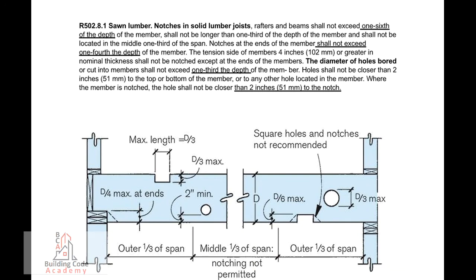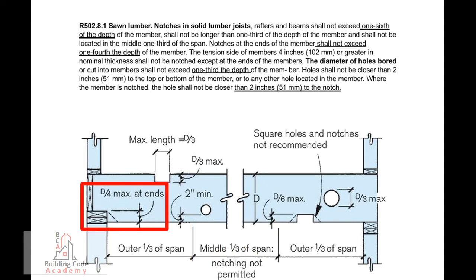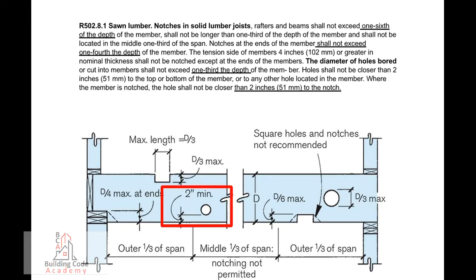Underfloor Space. R-502.8.1, Sawn Lumber. Notches in solid lumber joists, rafters, and beams shall not exceed 1/6 of the depth of the member, shall not be longer than 1/3 of the depth of the member, and shall not be located in the middle 1/3 of the span. Notches at the ends of the member shall not exceed 1/4 the depth of the member. The tension side of members 4 inches (102mm) or greater in nominal thickness shall not be notched, except at the ends of the members. The diameter of holes bored or cut into members shall not exceed 1/3 the depth of the member. Holes shall not be closer than 2 inches (51mm) to the top or bottom, or to any other hole located in the member. Where the member is notched, the hole shall not be closer than 2 inches (51mm) to the notch.